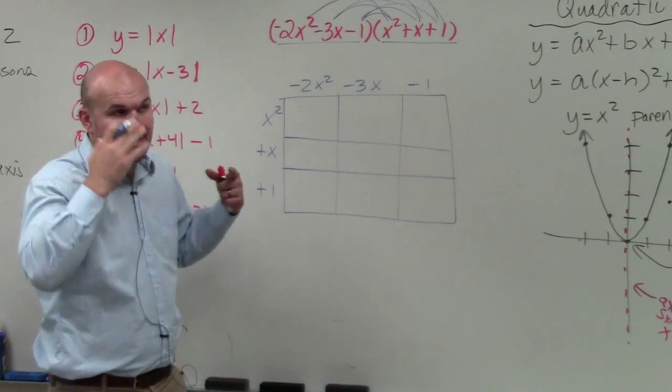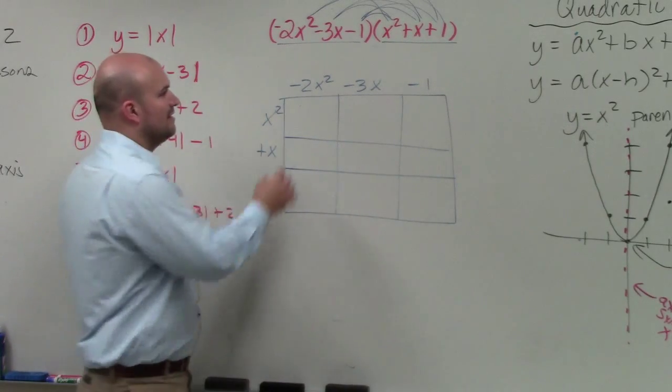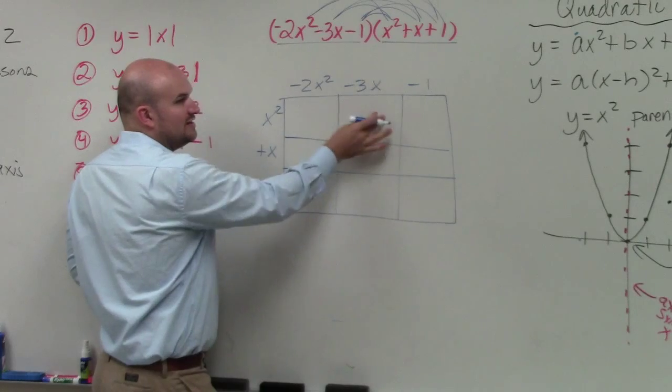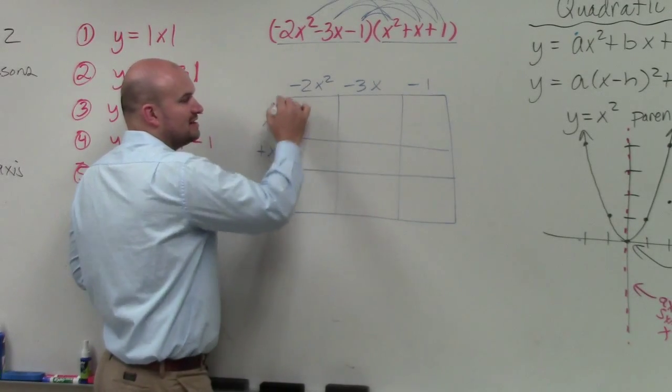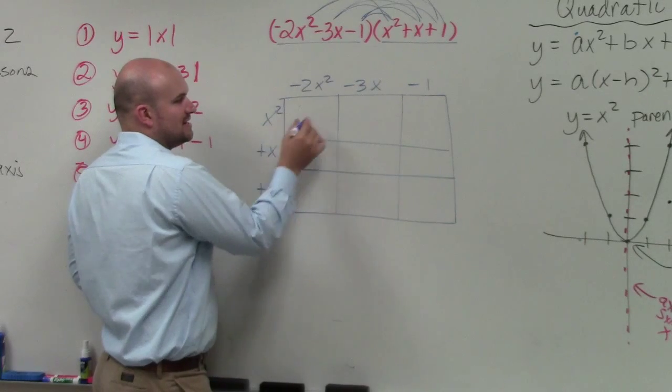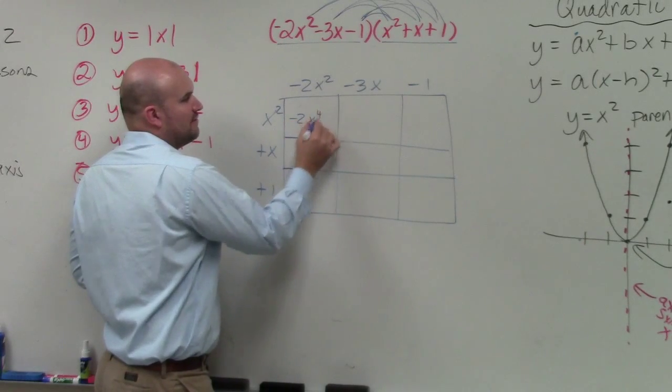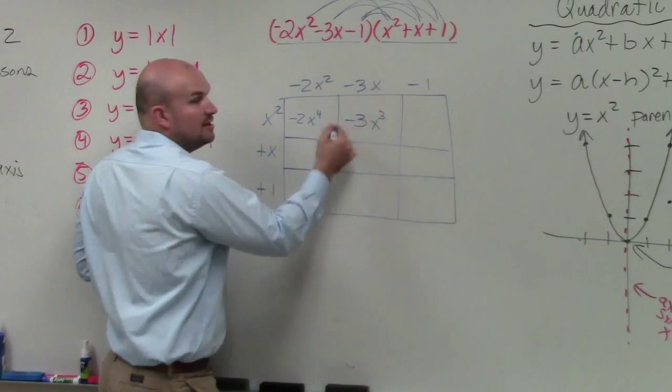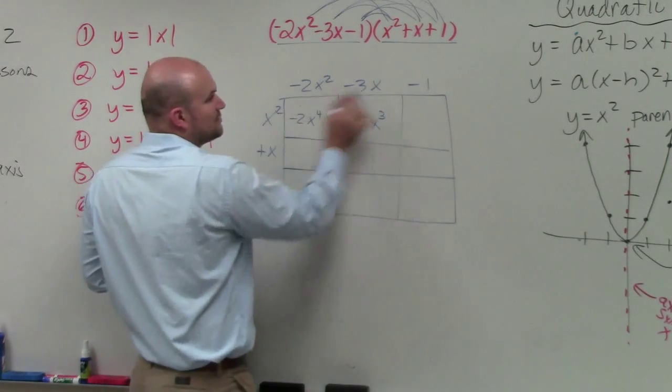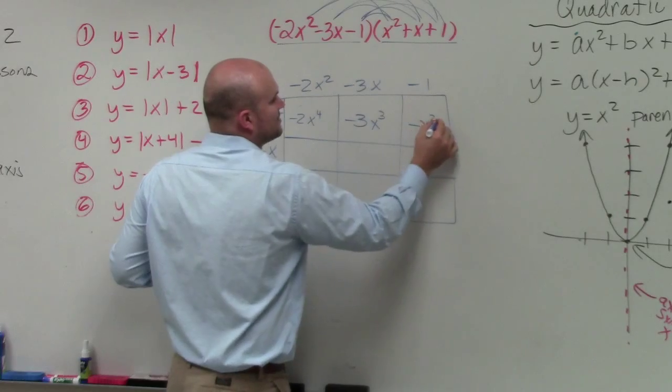Now all I need to focus on, rather than trying to do all this stuff, I just find the area of each box. And every area of each of these boxes has a length of x squared. So x squared times negative 2x squared is negative 2x to the fourth. x squared times negative 3x is negative 3x cubed. I'm adding the powers. x squared times negative 1 is negative x squared.